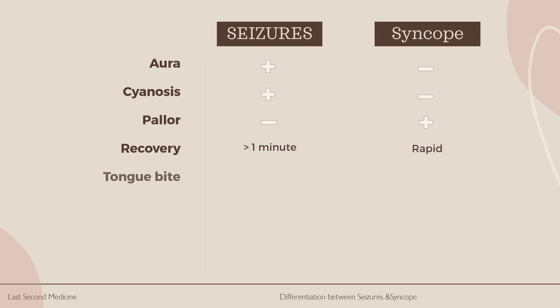Number 5: Tongue bite. If there is tongue biting on the lateral edges of the tongue, this is noticed in seizures but not in syncope.